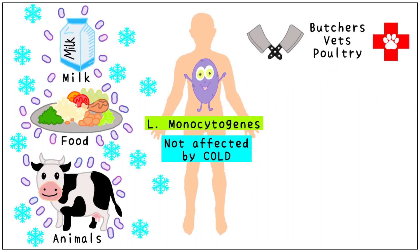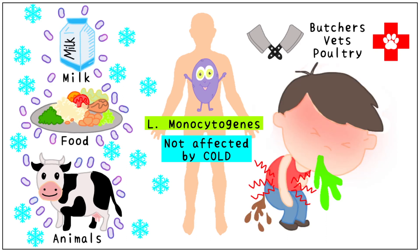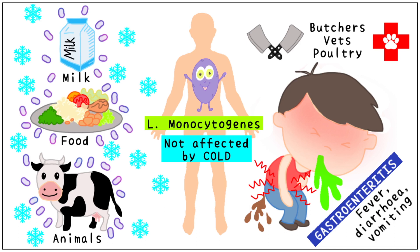In adults, it usually causes gastroenteritis — a combination of diarrhea, vomiting, stomach pain, fever, and nausea. However, it can also cause meningitis, brain and spinal abscesses, and septicemia, especially in immunocompromised individuals.